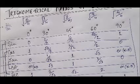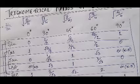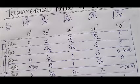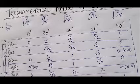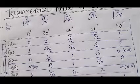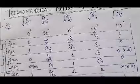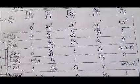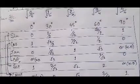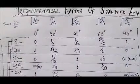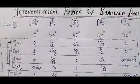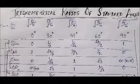When the exam starts, at that time make this table on the back side of the sheet, then use these values and you can easily solve the questions. This is all about the table and the explanation of trigonometrical ratios of standard angles.